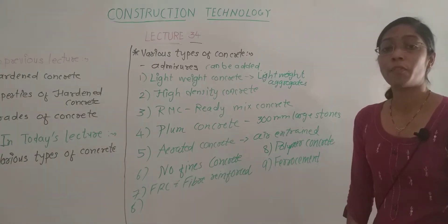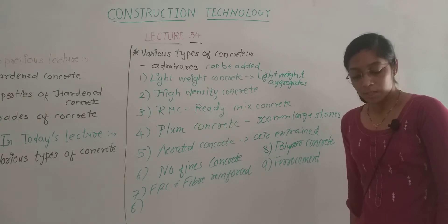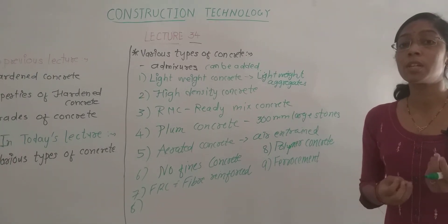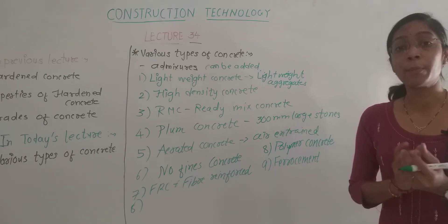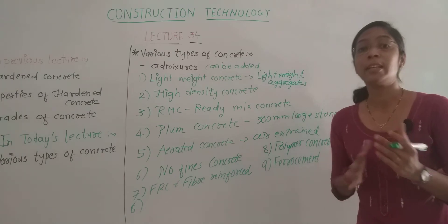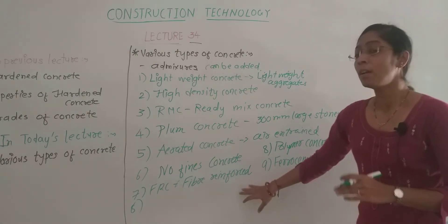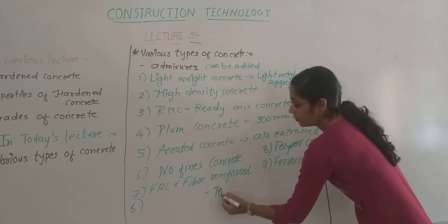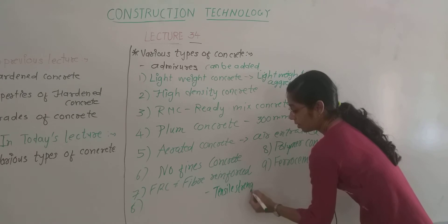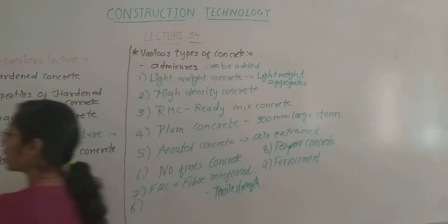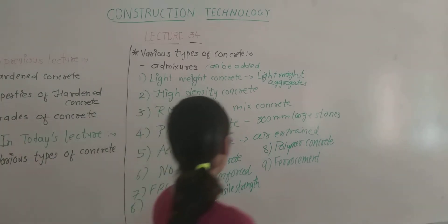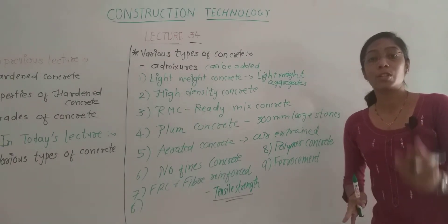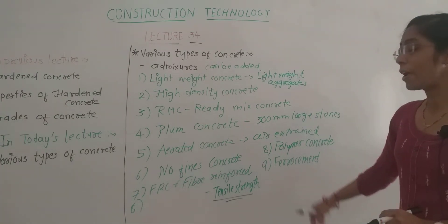In fiber reinforced concrete, fibers such as plastic, glass, or wood are added to cement to improve binding and strength properties. Normal cement plus fiber gives fiber reinforced concrete, which improves tensile strength. Polymer concrete uses different kinds of polymers as additives.